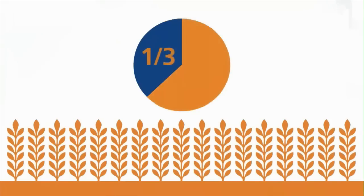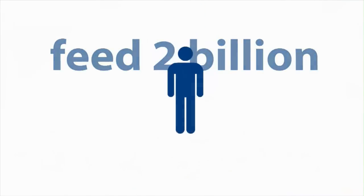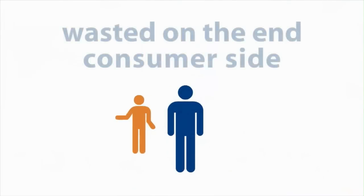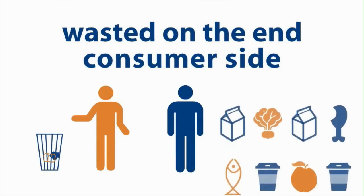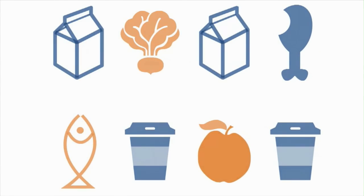One-third to half of globally produced food is wasted, an amount big enough to feed 2 billion people. While in developed regions, a significant share of this usually gets wasted on the end-consumer side, in developing regions, food waste occurs through poor infrastructure before it even reaches a consumer.